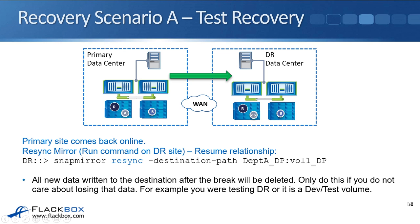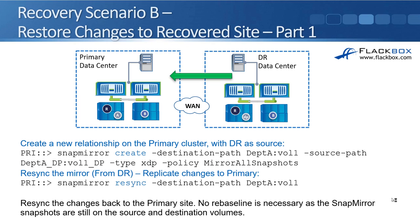If it was a real disaster recovery event and you made changes on the DR site that you need to keep, definitely do not run resync from the DR site — you will lose those changes. In a real DR scenario where you lost the primary site and failed over to the DR site, when the main site comes back online you want to replicate those changes made at the DR site back to the primary site. We don't need a new initial baseline transfer because the primary data center was just offline — the original data and SnapMirror snapshots are still there, we just need to replicate the delta changes across.